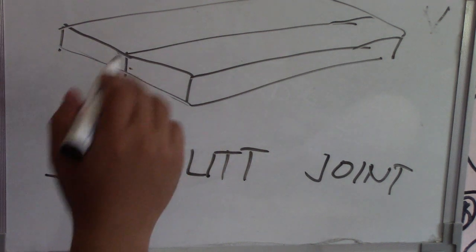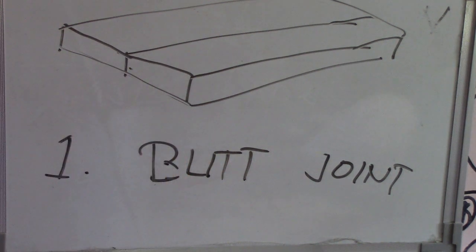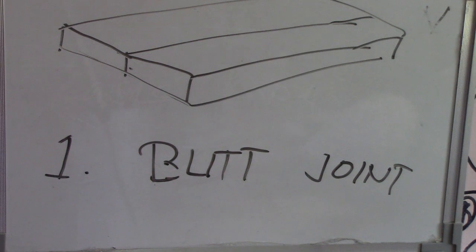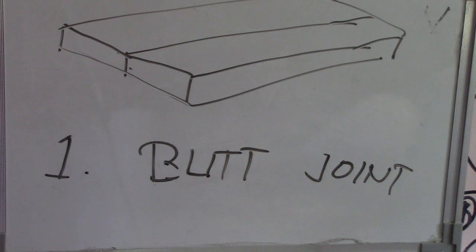For the butt joint, the applicable welds and weld symbols are: bevel groove, flare bevel groove, flare V groove, J groove, square groove, U groove, V groove, H weld, and scarf. Those are the applicable welds and weld symbols for the butt joint.